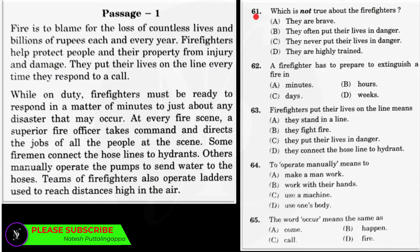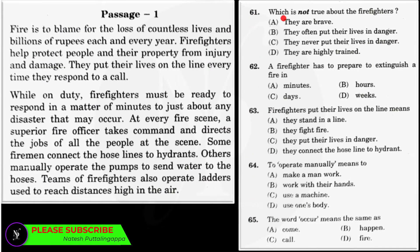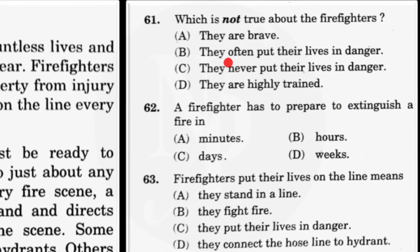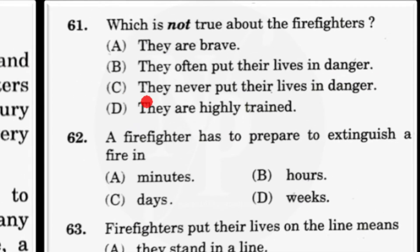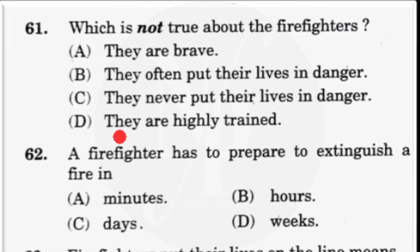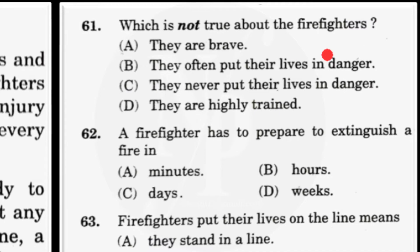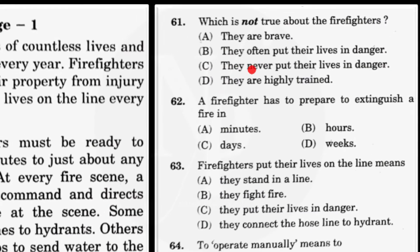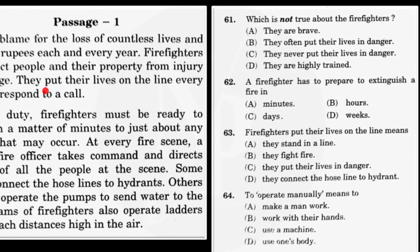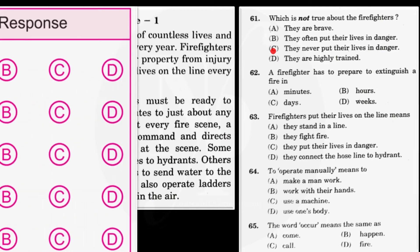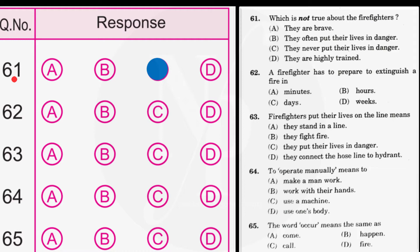There are five questions from question number 61 to 65. Let us answer these questions one by one. Question 61: Which is not true about the firefighters? Answer option A: they are brave. B: they often put their lives in danger. Option C: they never put their lives in danger. We have to select the answer which is not true about firefighters. In answer option C, we read that they never put their lives in danger. However, in the passage we read that they put their lives on the line every time they respond to a call, meaning firefighters always put their lives at risk. So answer option C is not true about firefighters, and we mark C as the correct answer for question number 61 on the OMR answer sheet.